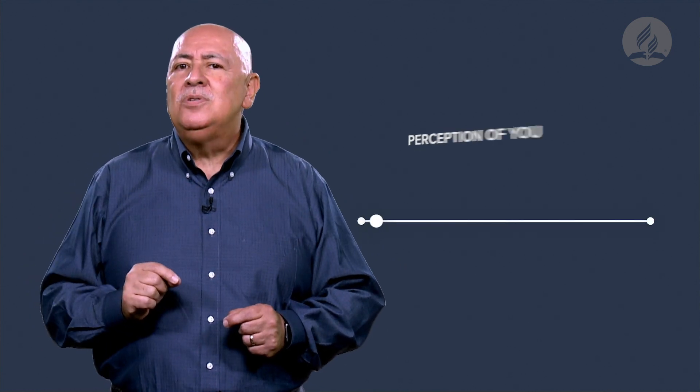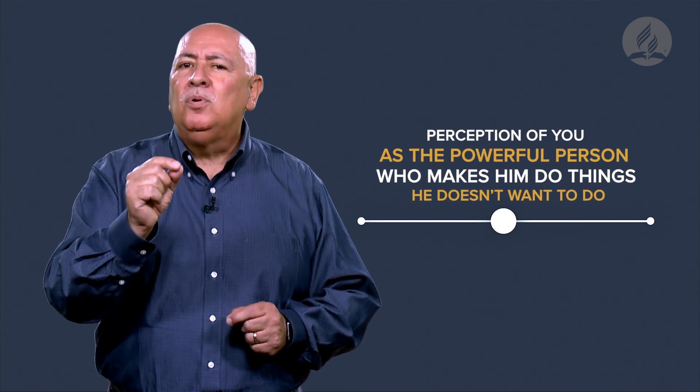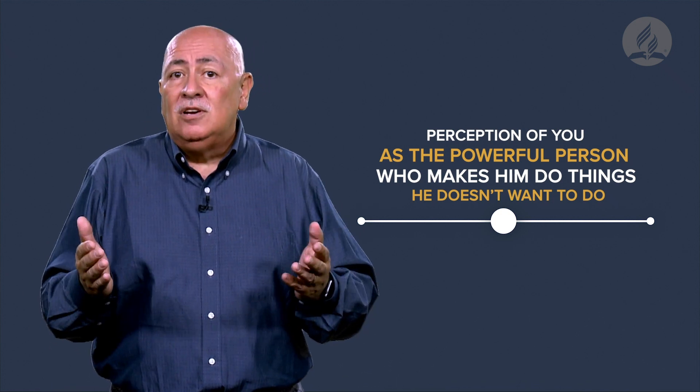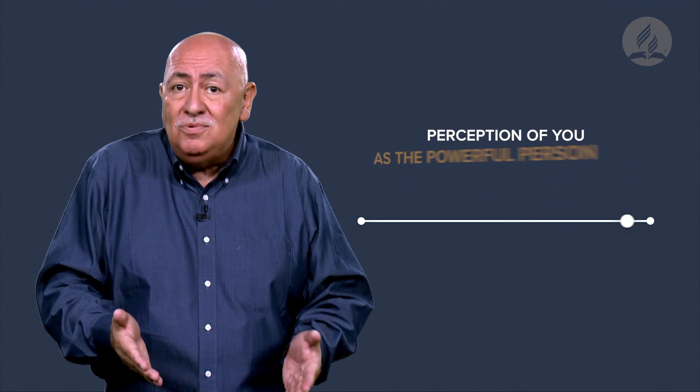In our illustration, when the child did not want to go to school, he mistakenly labeled it as an injustice. He has developed the perception of you as the powerful person who makes you do things he doesn't want to do, particularly because he does not enjoy doing them.